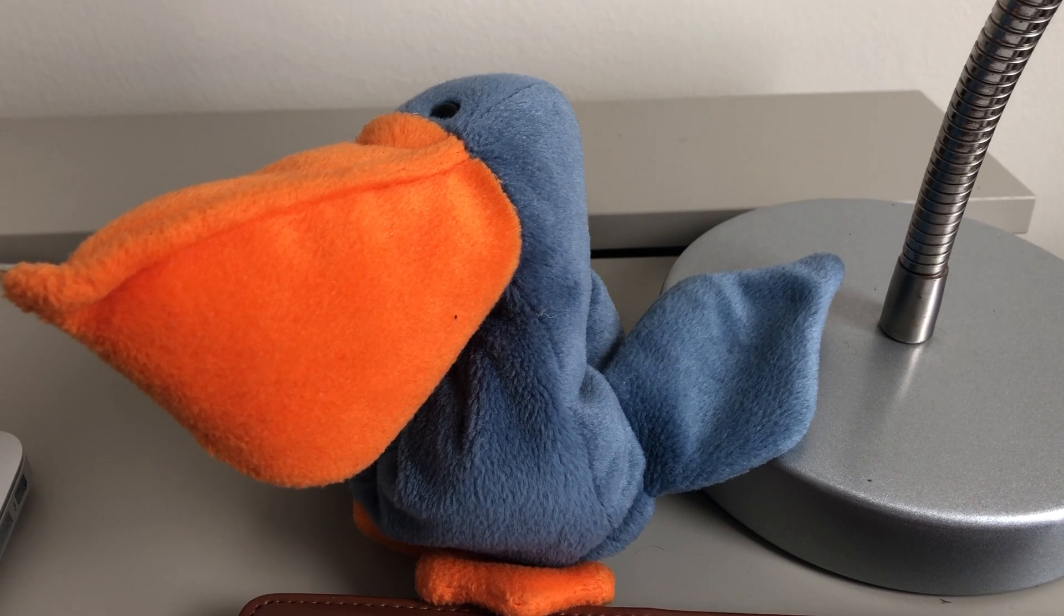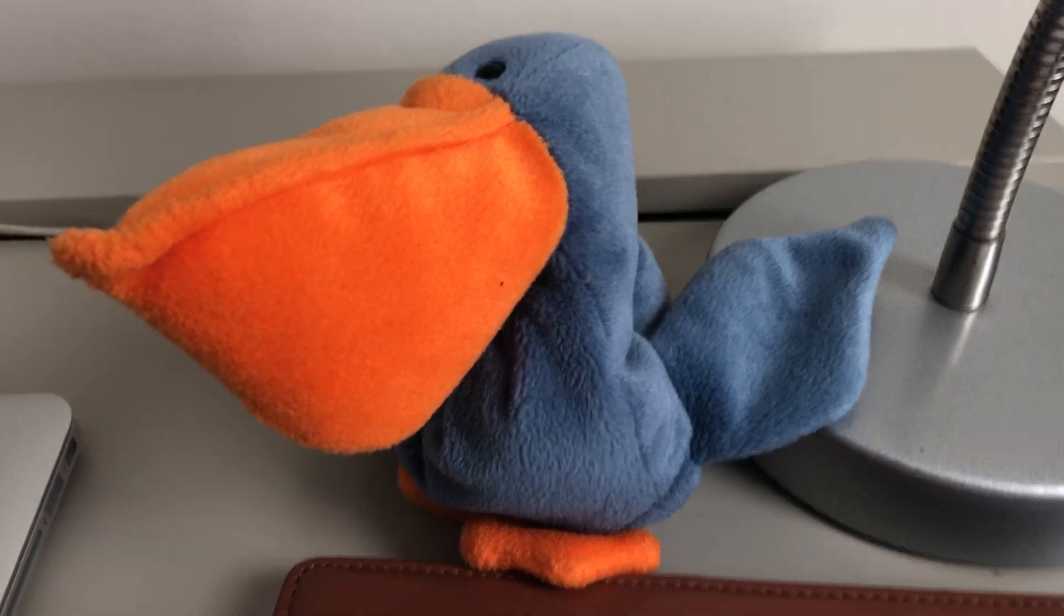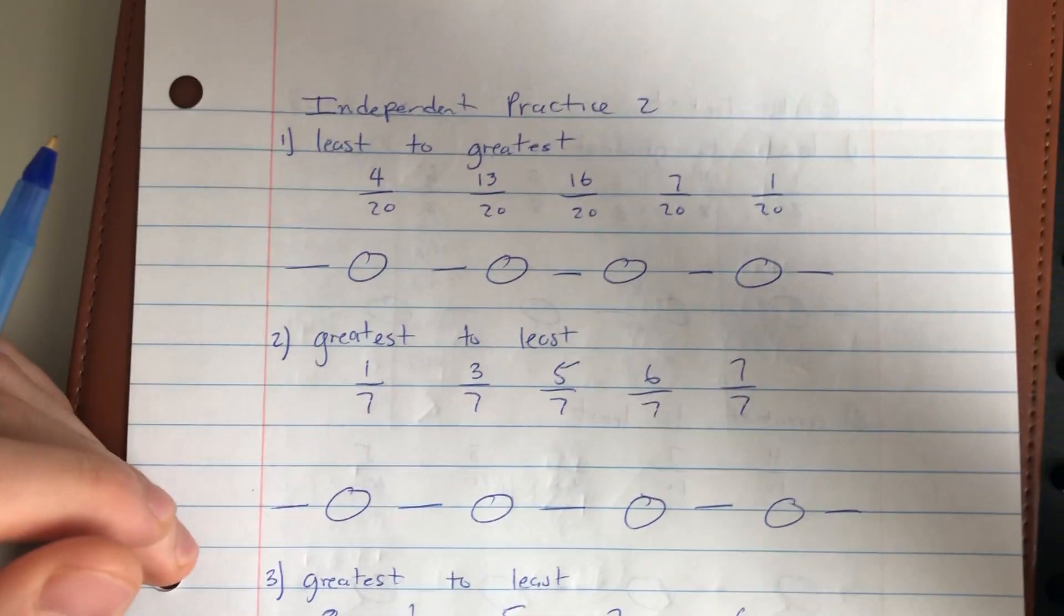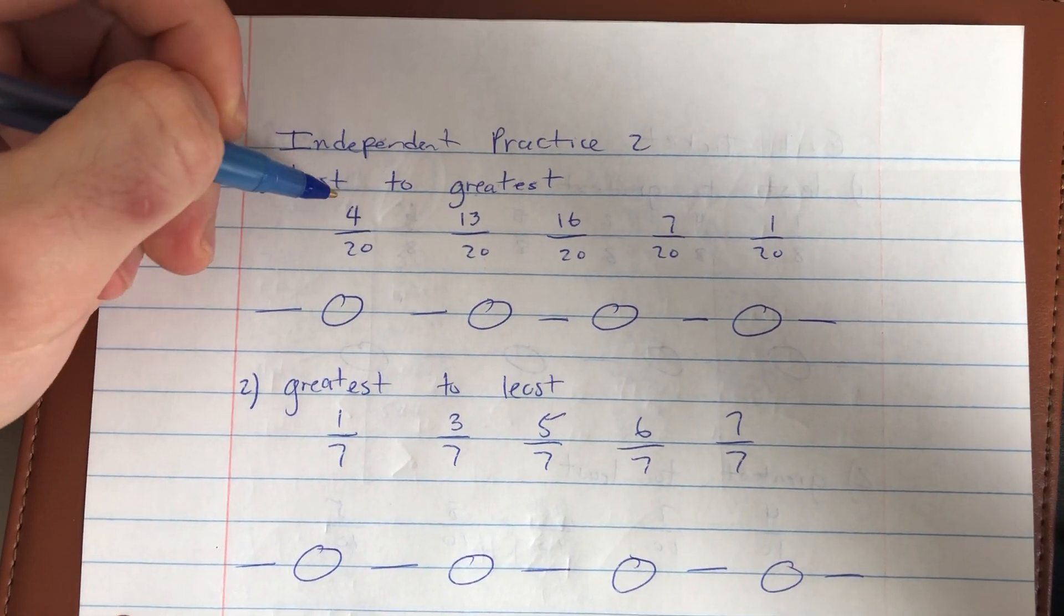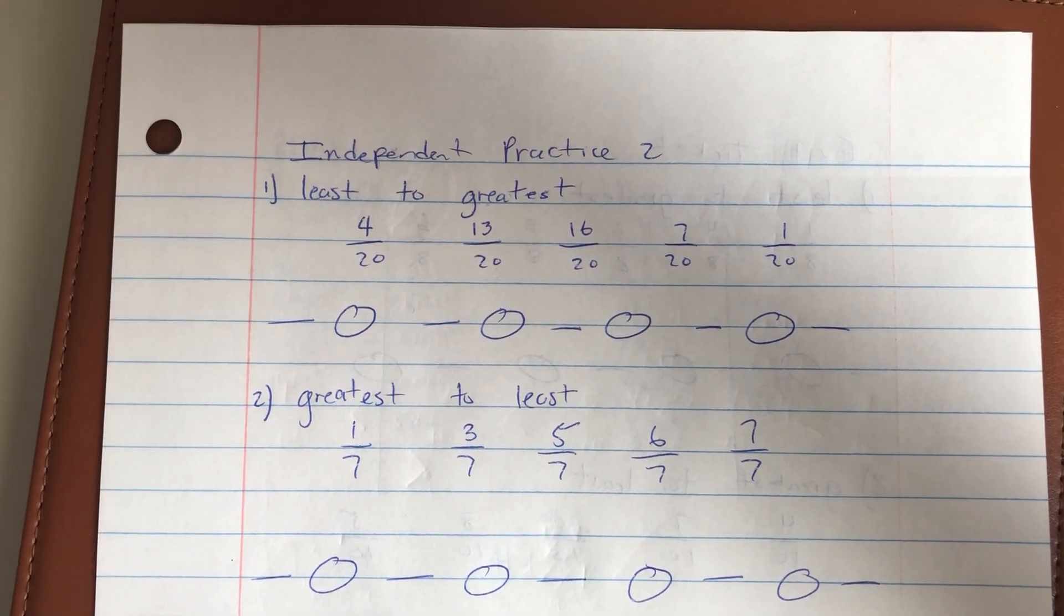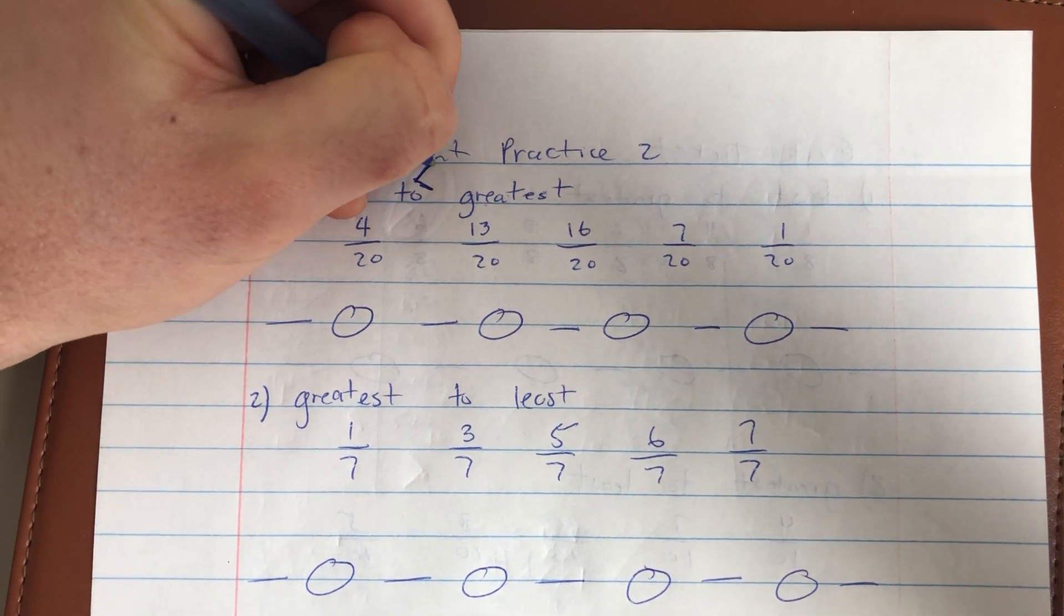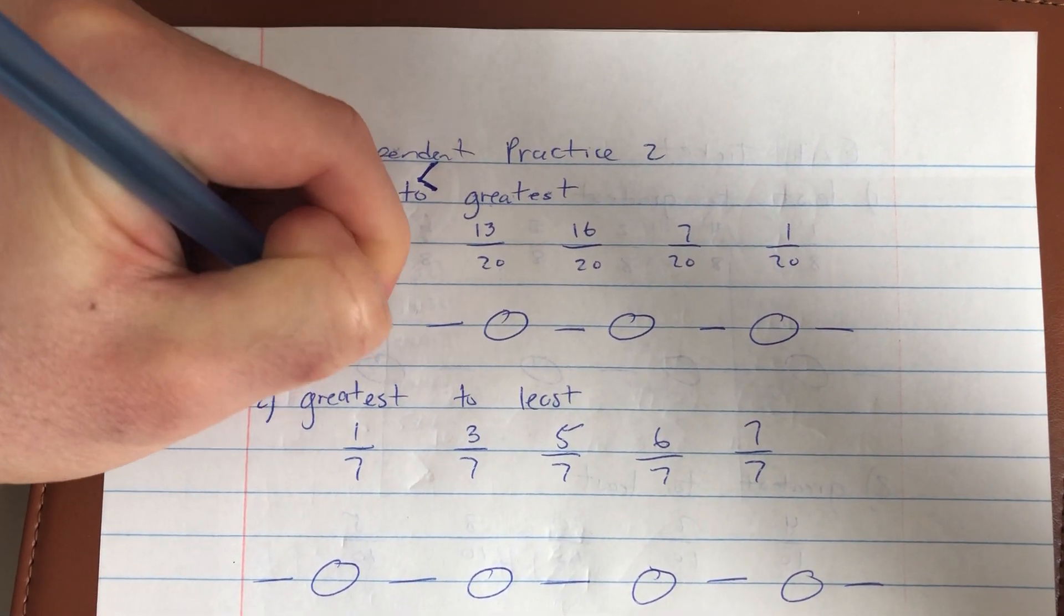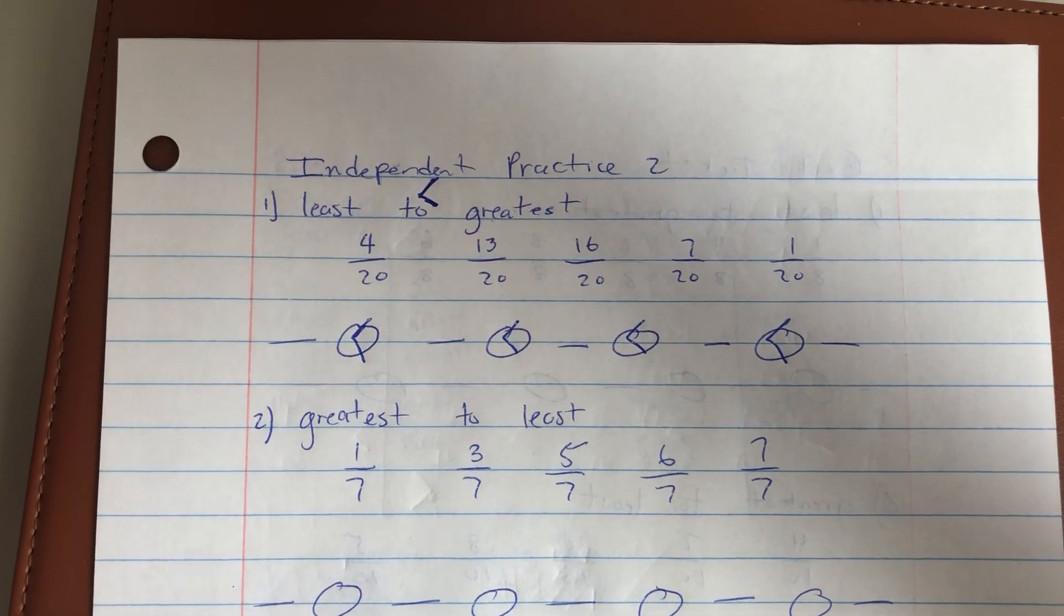What's up all you super sea gals and sea guys? Alright, time to go over independent practice number two. We're going to go over every problem from least to greatest. Make sure our inequality symbols are facing the right way. The gator always eats the greater, so I'm going to make sure that my gator is eating the greater fraction every single time.